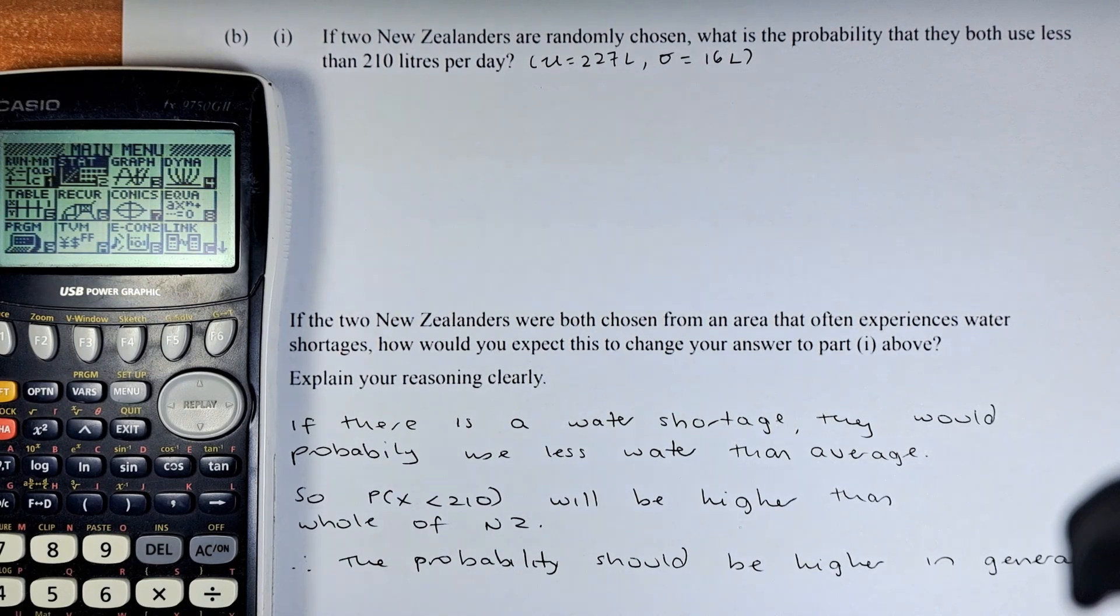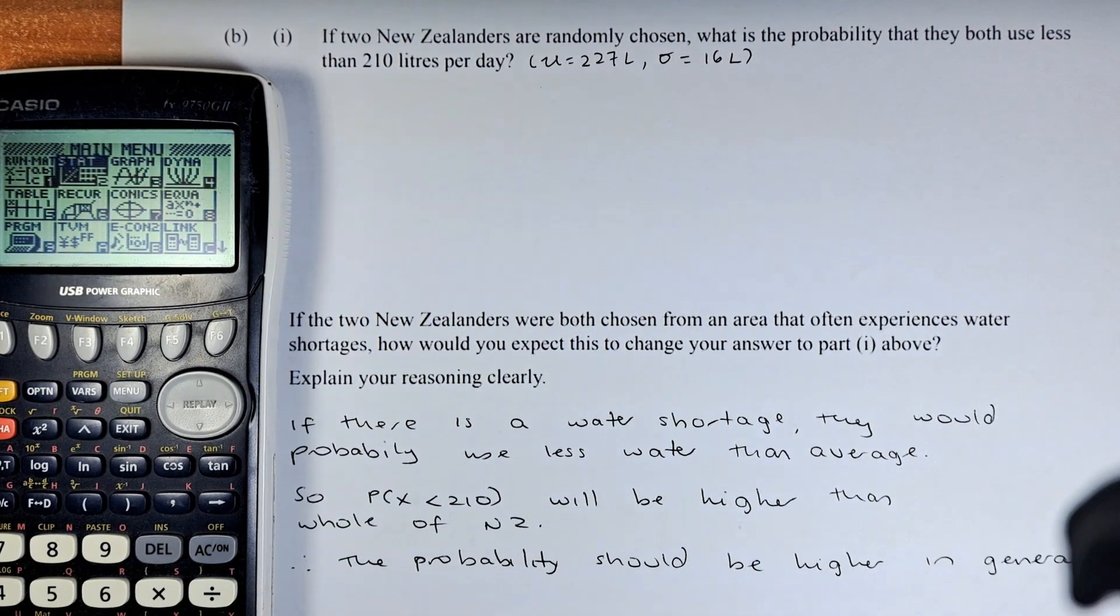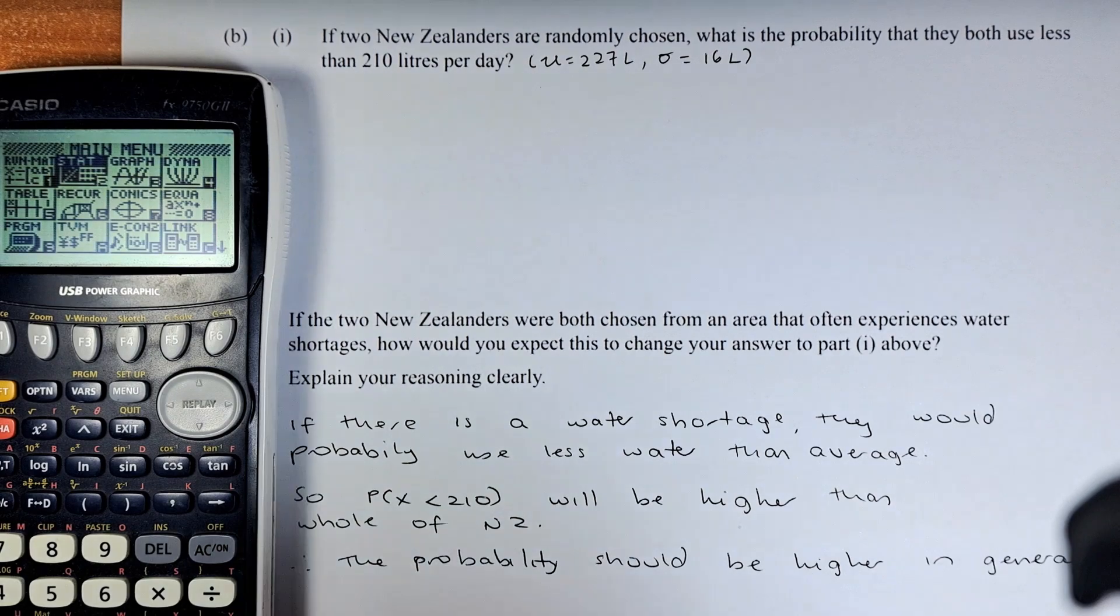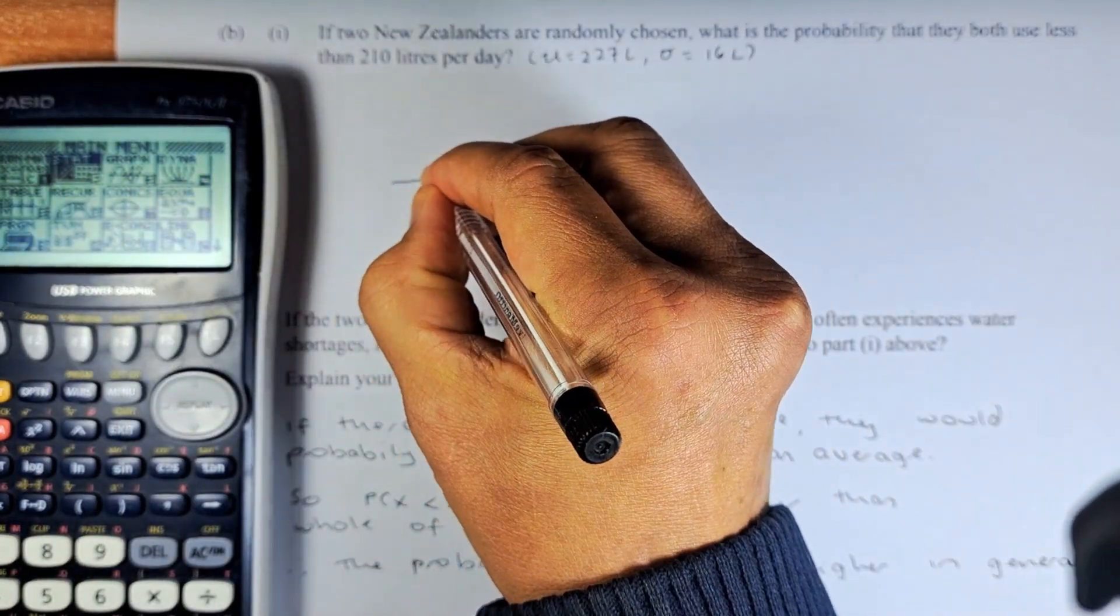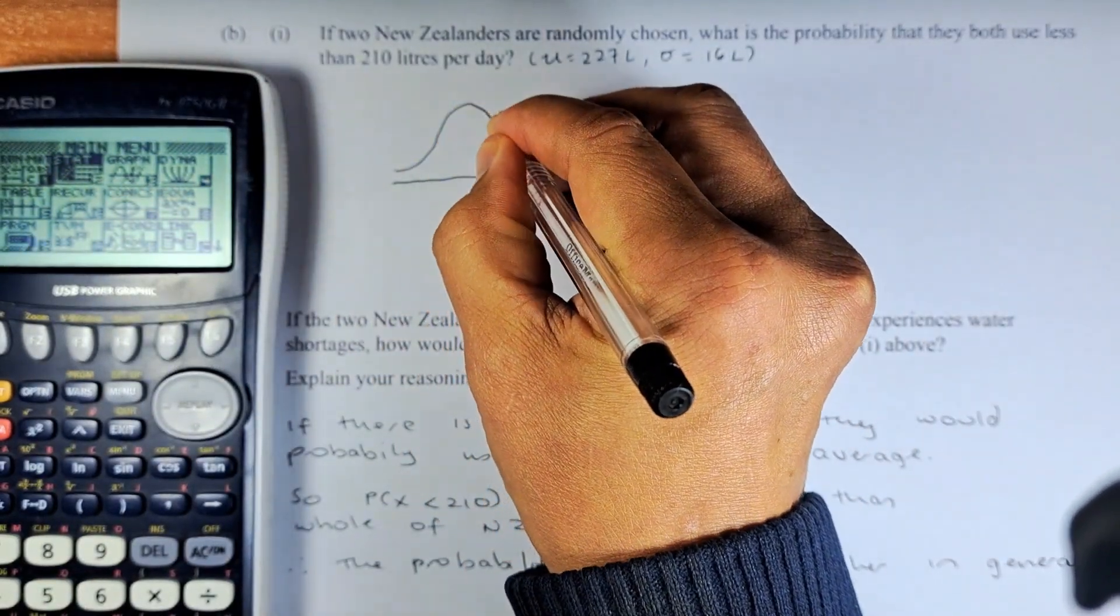As all normal distribution questions, you have to draw a graph. The graph of normal distribution is a bell-shaped graph. So we are going to draw a sketch of the graph.